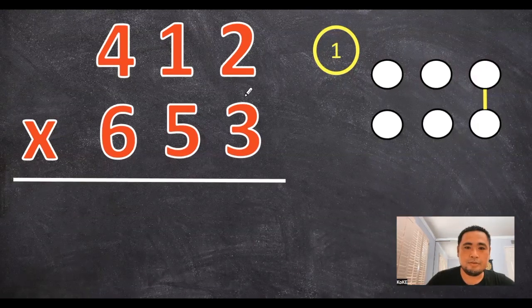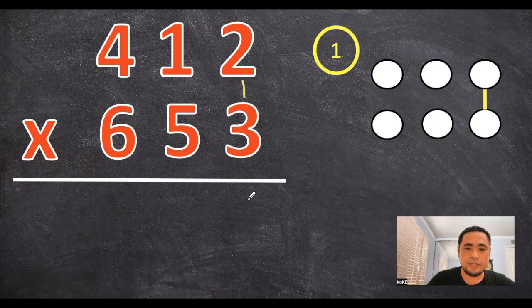Step one is to multiply these two numbers, so the 2 times 3 gives us a 6.